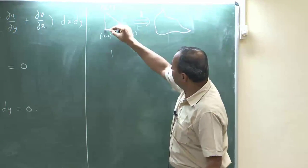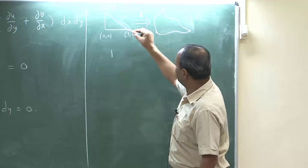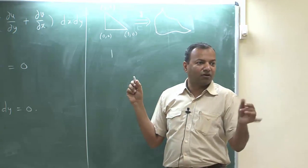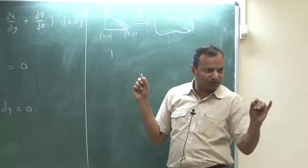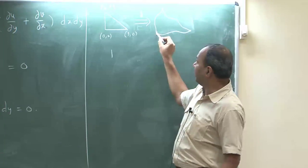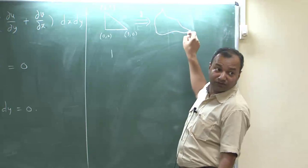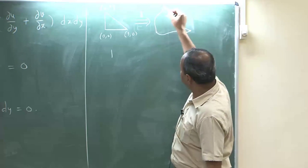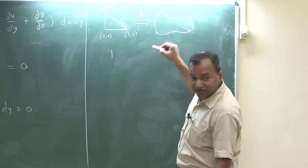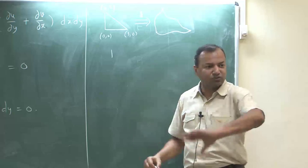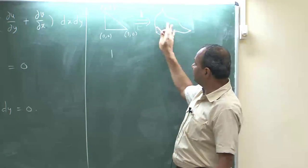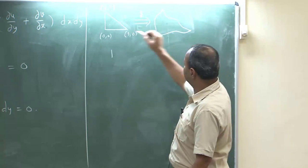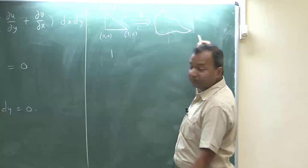Map this corner point to this point, this point to this point, this point to this point. These are the only three non-differentiable points, which get mapped to the three non-differentiable points. All the other edges — this edge is mapped to this edge, this edge to this edge, this edge to this edge — in a smooth way.